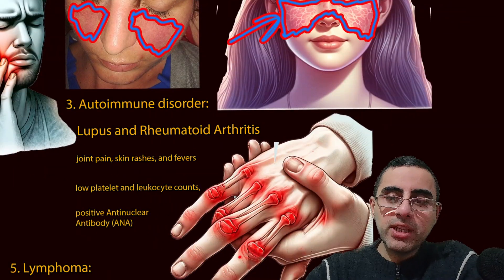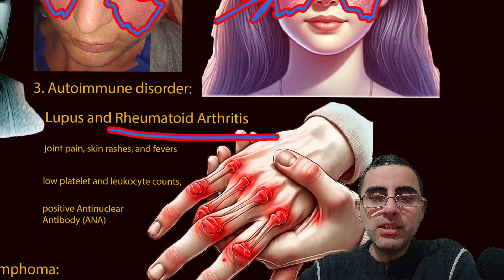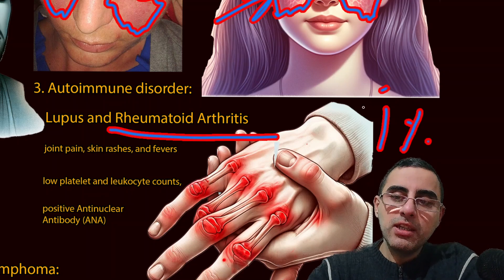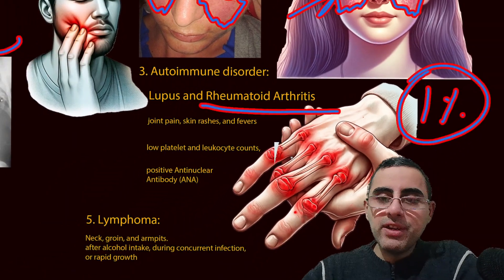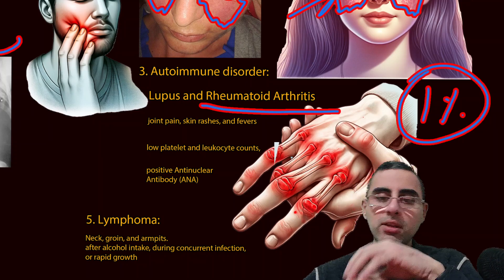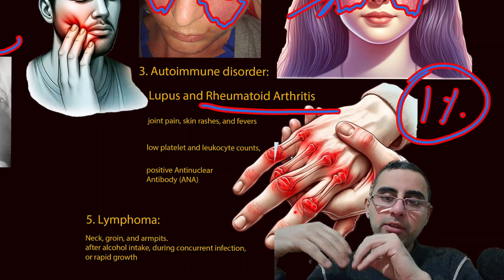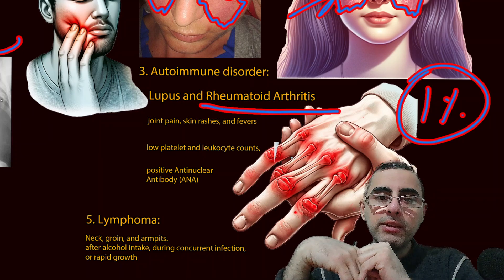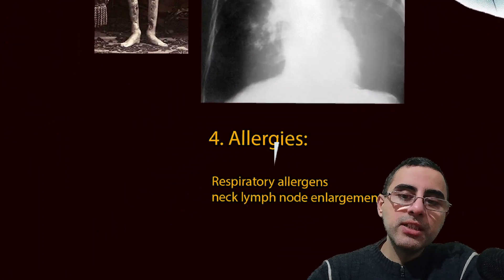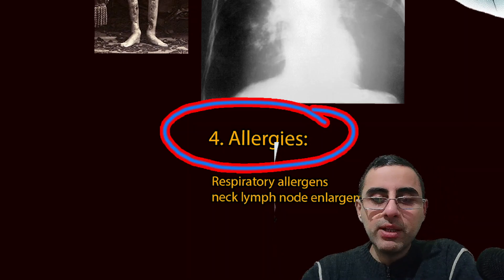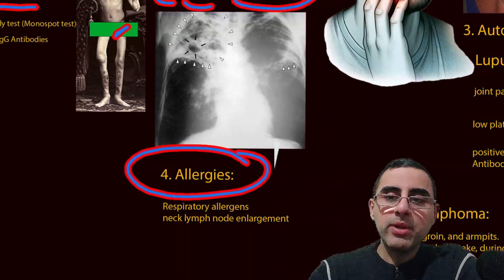Another common disease which can cause enlargement of lymph nodes is rheumatoid arthritis, which affects around 1% of the population, making it quite a common condition. In this case there is symmetrical damage and symmetrical pain of hands, fists, and different types of joints. Allergies are the fourth most common cause — especially respiratory allergens can cause enlargement of neck and other lymph nodes.